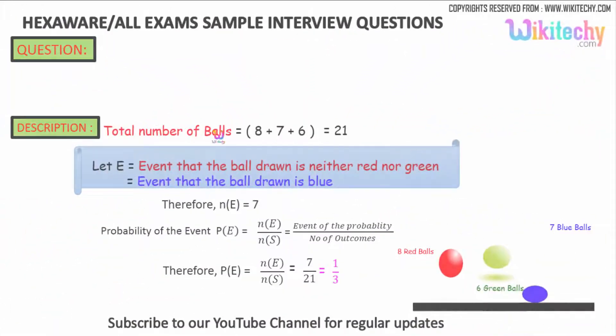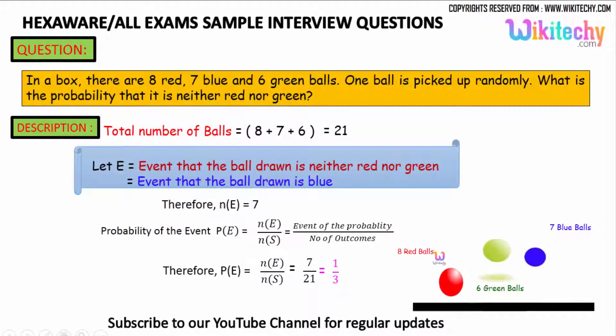The probability is like the total number of balls is 8 red balls plus 7 blue balls and 6 green balls. The total number of balls is 21.